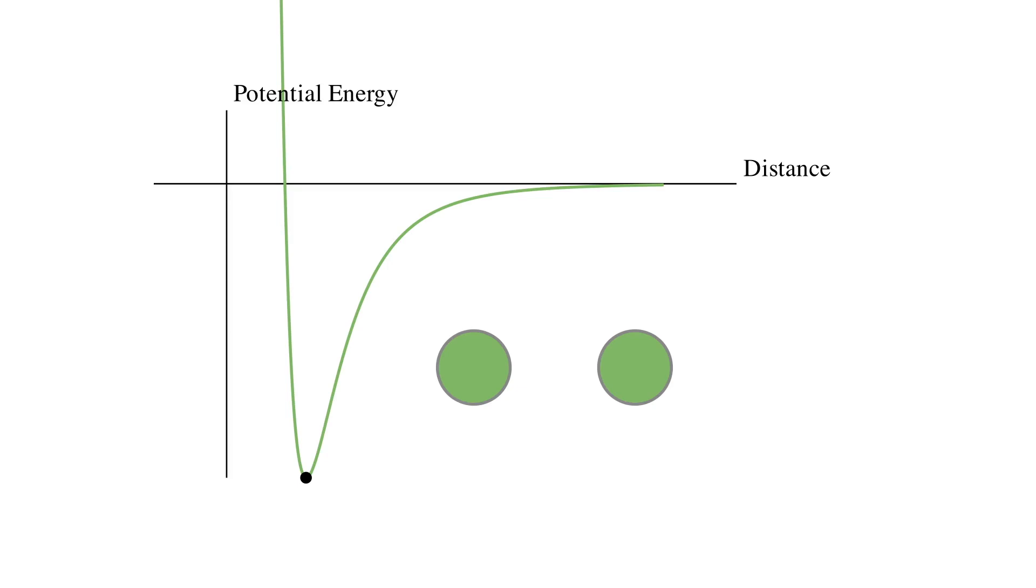If we push the atoms even closer together, then we see really strong repulsive forces. The reason why the forces and the potential energy behave in this way is the interaction between the electrons and the protons in the two atoms.